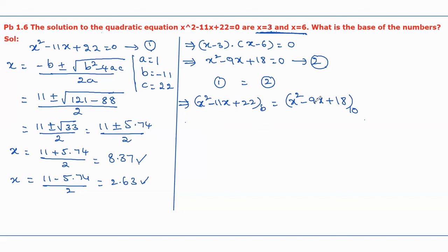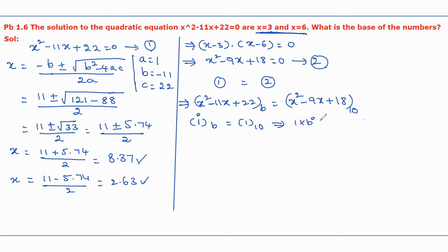Comparing the coefficients of the x squared terms: 1 in base b equals 1 in base 10. To convert to decimal, we take the weight: 1 times b to the power 0 equals 1 in base 10, which gives 1 equal to 1. This holds true in both number systems.